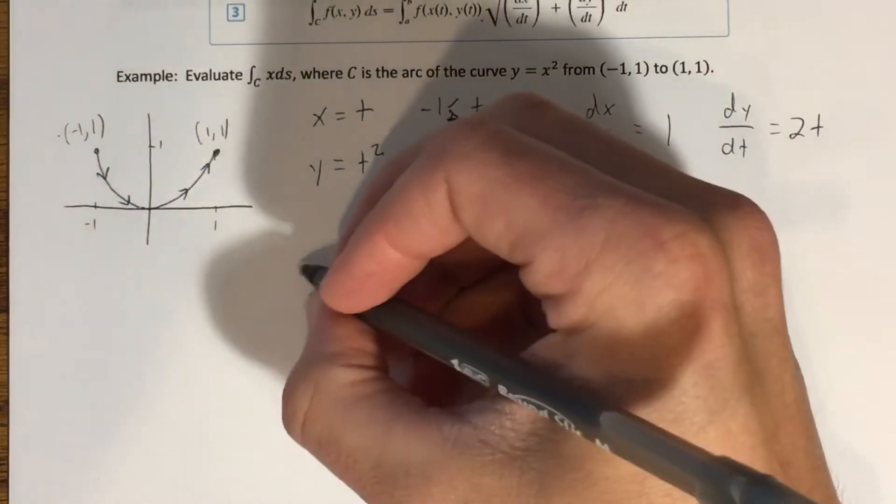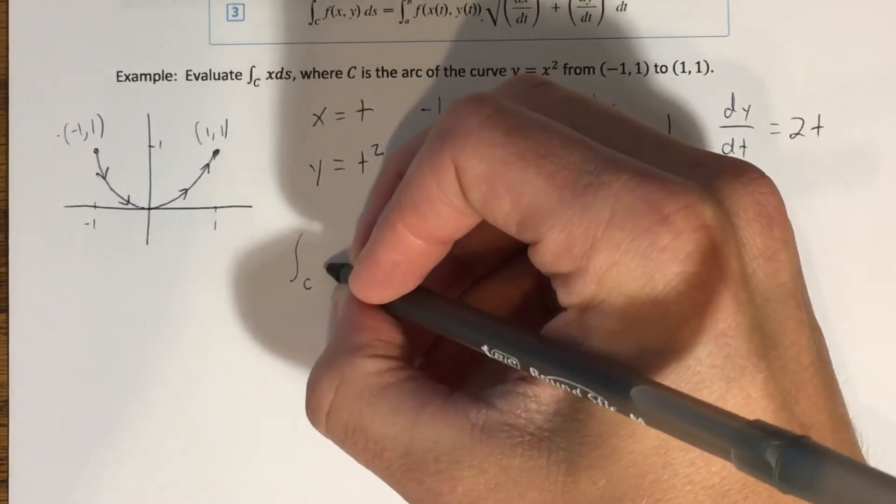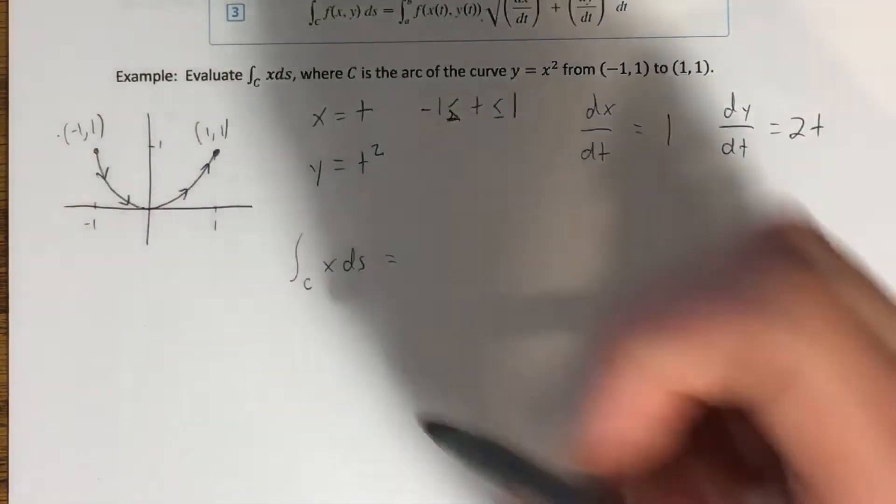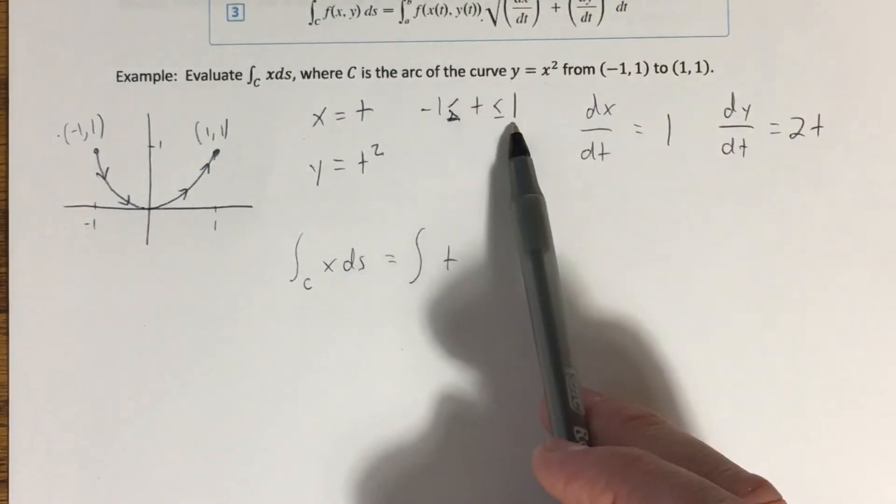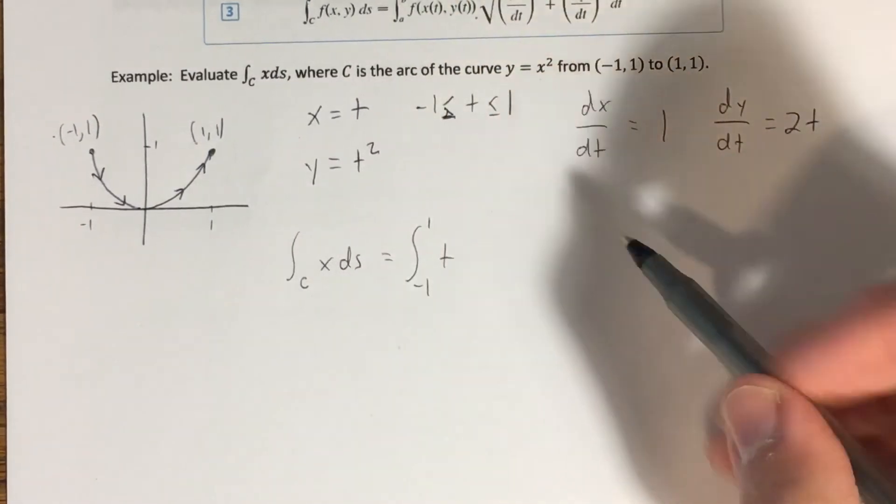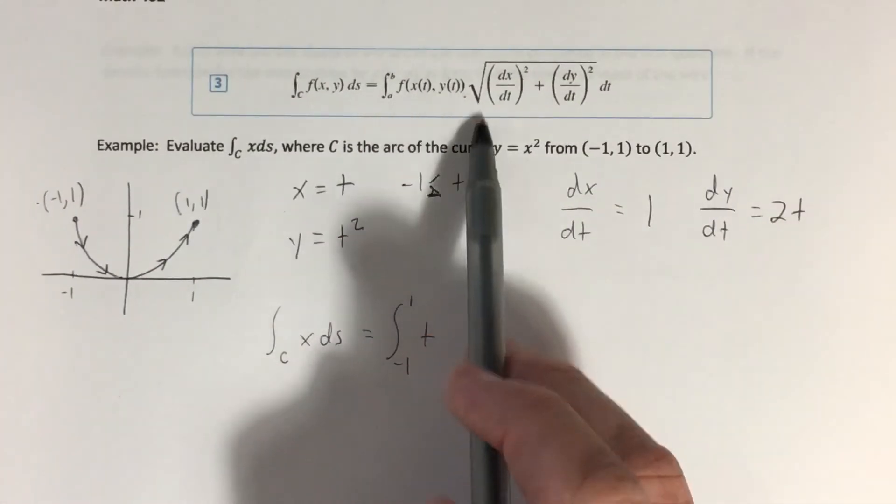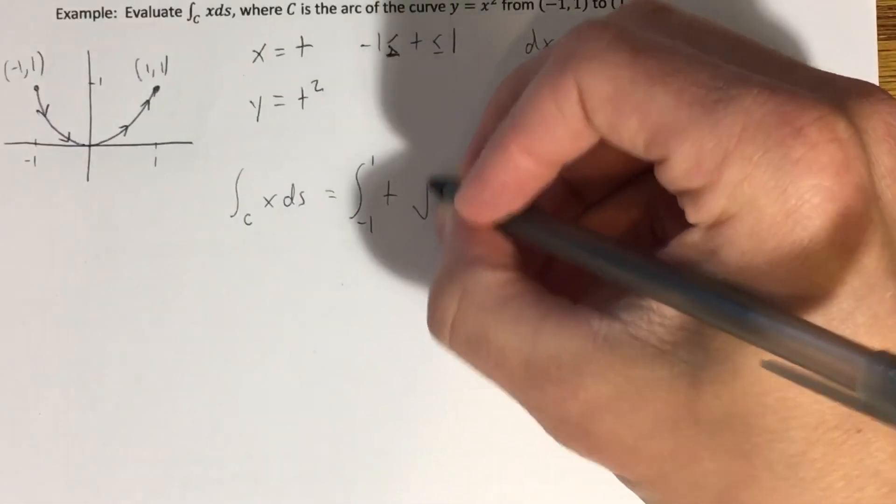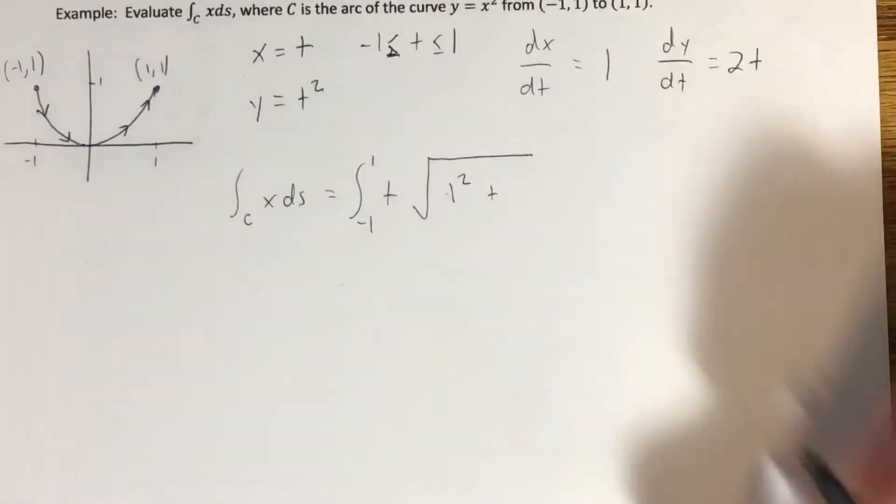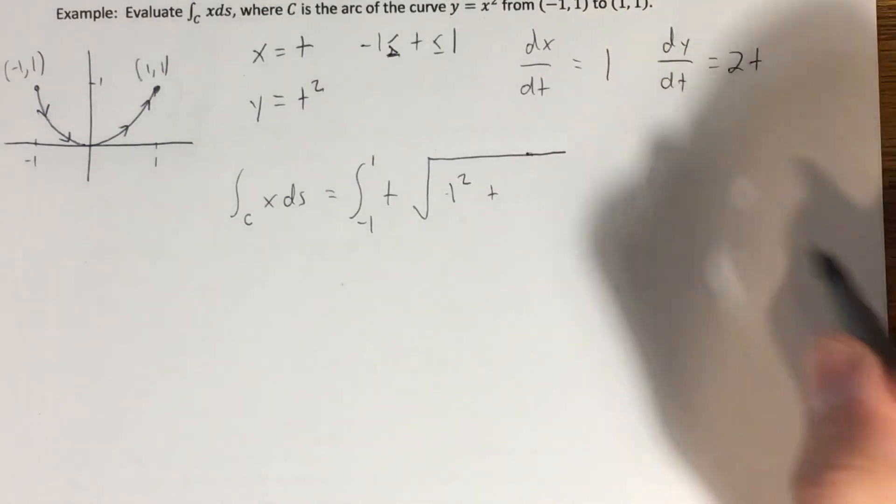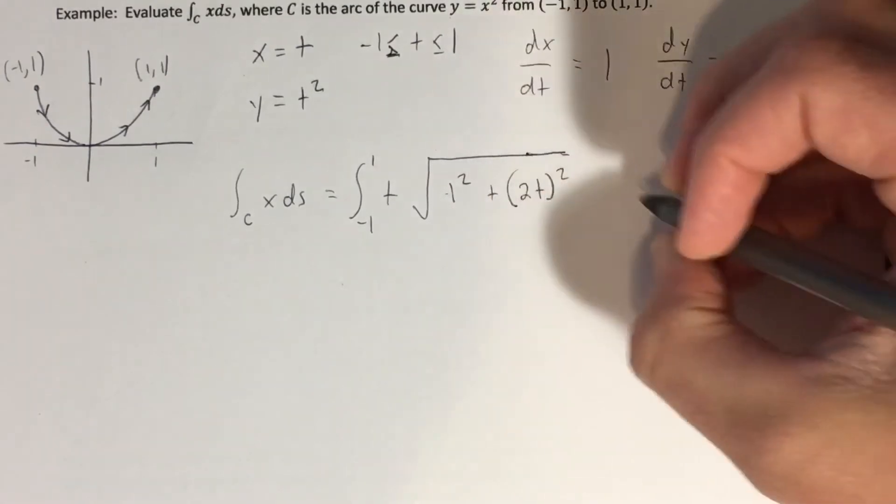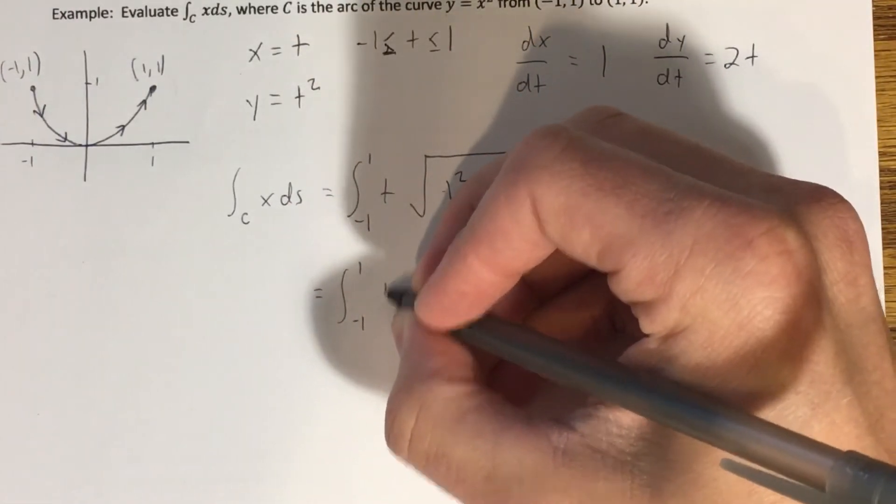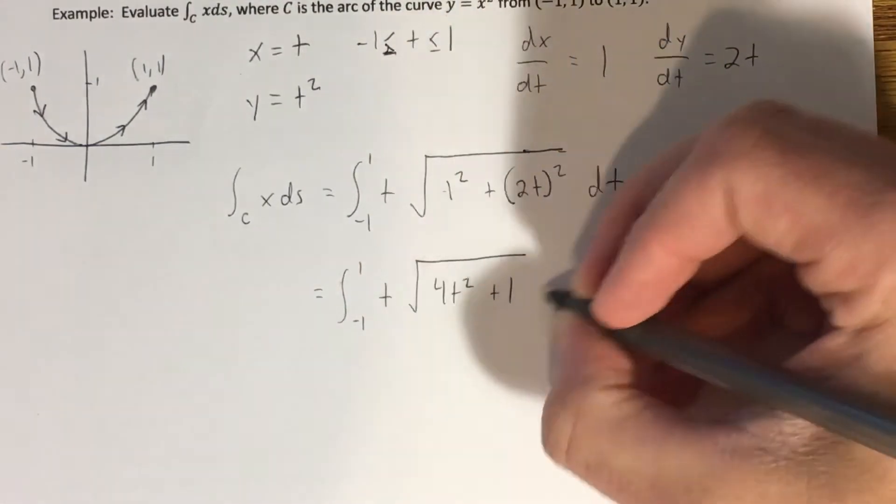So to evaluate this integral now, the line integral of x ds along c, well, I make a substitution in my function, so x is equal to t. I have to put a t there. My limits of integration are going to be negative 1 to 1. And then that takes care of the first part of this thing up here. Now I need to multiply by the ds, which is the square root of the sum of the squares of those two derivatives, dt. So this becomes the square root of dx dt squared, that's 1 squared, plus dy dt squared, which we found here, that's 2t squared. And then I have a dt here now. Okay, next step, integral from negative 1 to 1 of t times the square root. This would become 4t squared plus 1 dt.